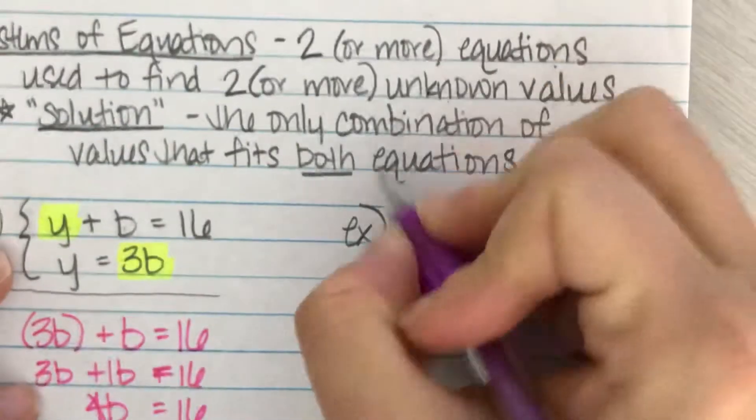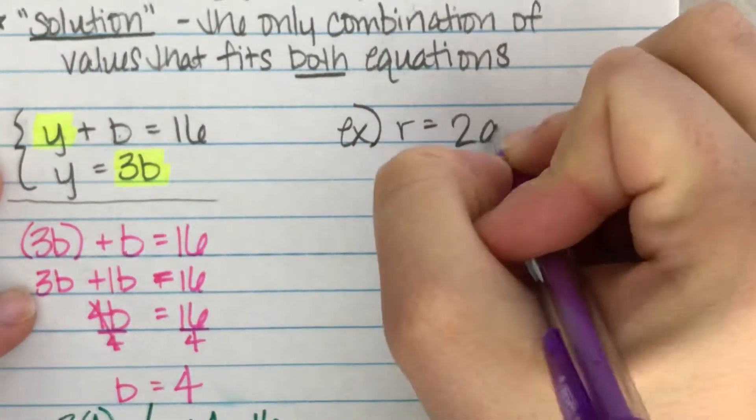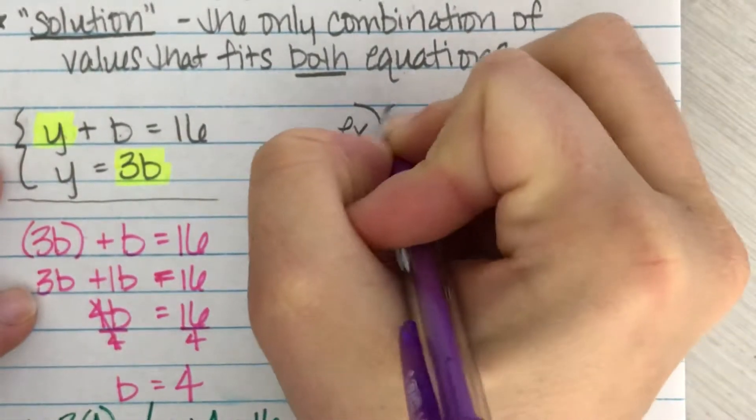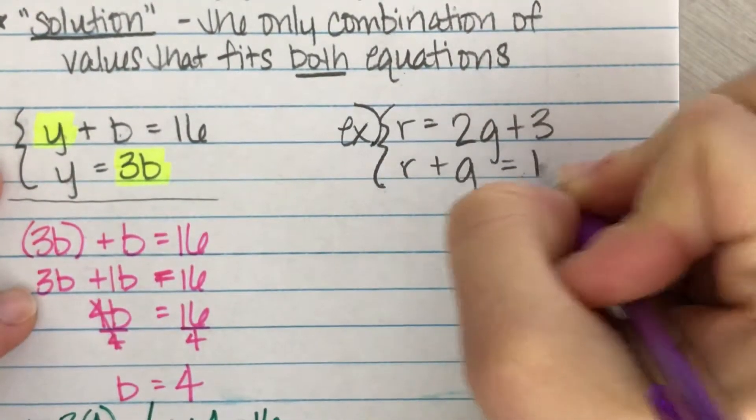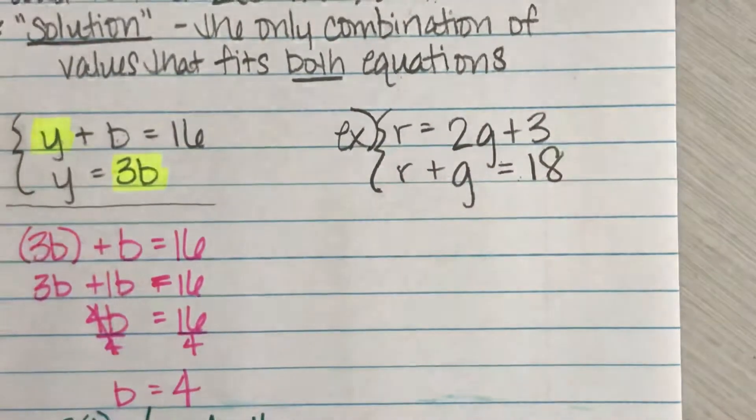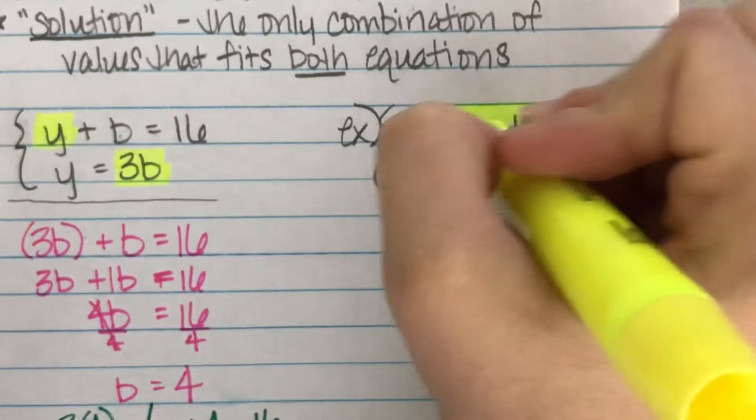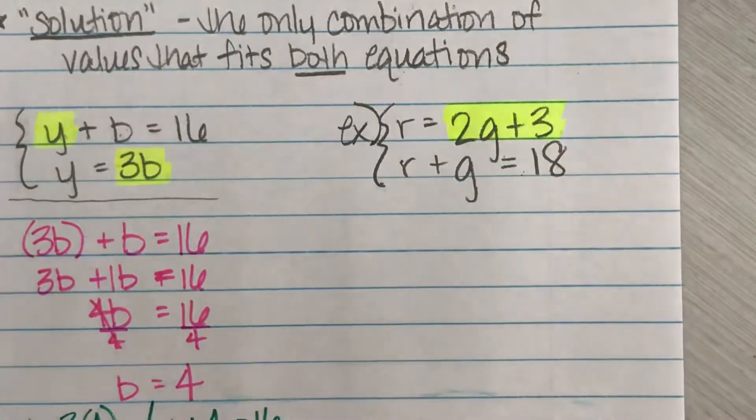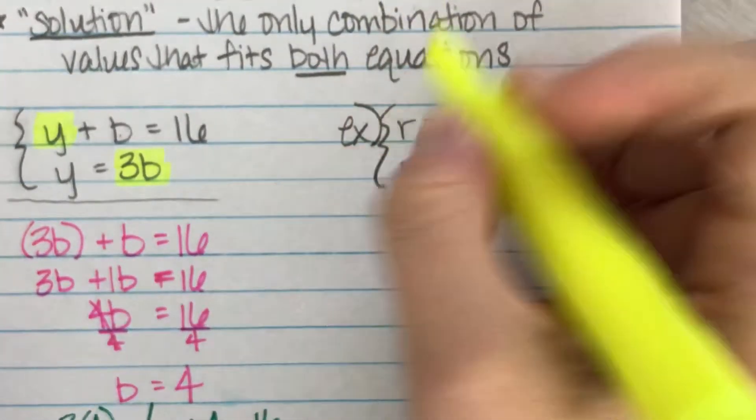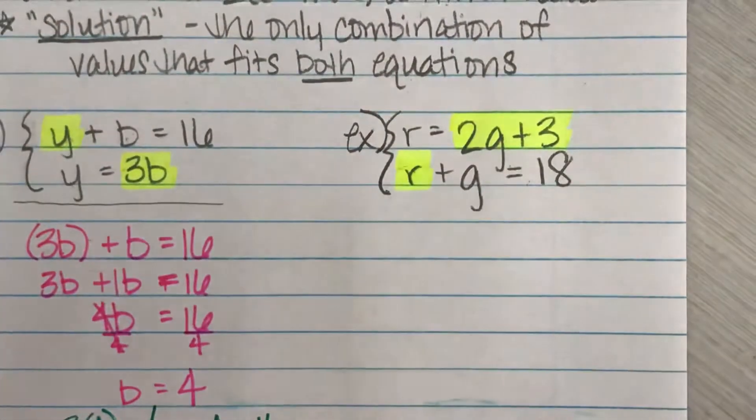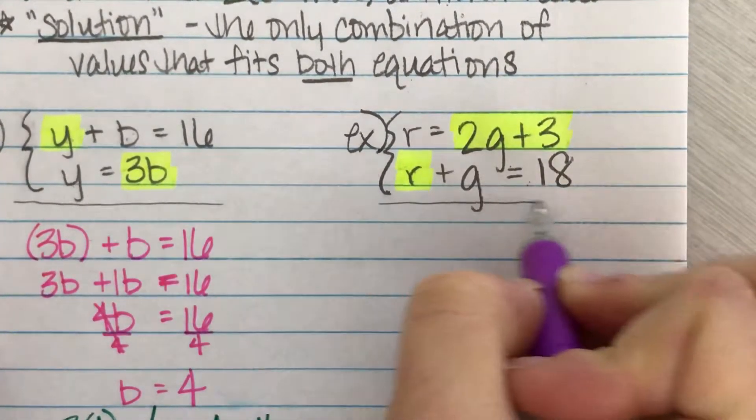All right. Let's look at another one. Let's say this time my red candies equals two times the green plus three. And I know that red plus green together equals 18. Well, let's see. I know I have the formula for red. Red can also be known as 2g plus three. So that's helpful because now I can say, you know what, this r down here that's making things confusing because I got two different letters.